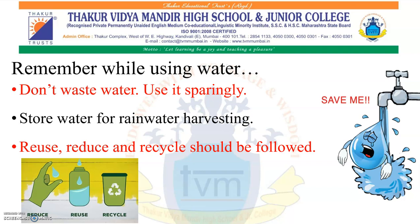The third one is recycle. The process of reusing the treated waste water is called recycling the water. For example, grey water. Grey water is the waste water that doesn't contain any sewage — that is, the relatively clean waste water from baths, sinks, washing machines and other kitchen appliances. This clean waste water can be treated and reused again, for example for flushing the toilets. So this way water can be recycled and used again.